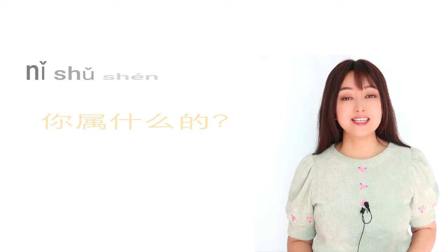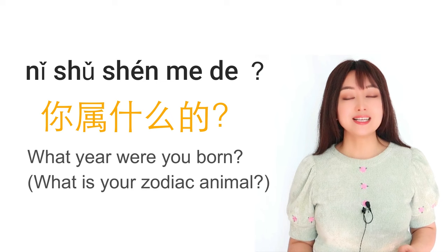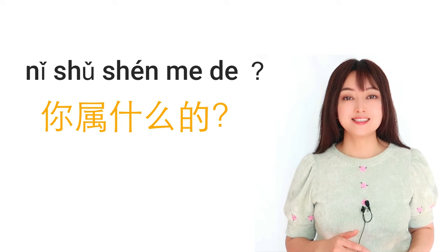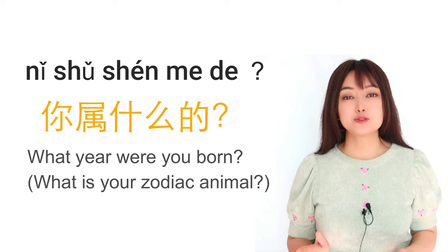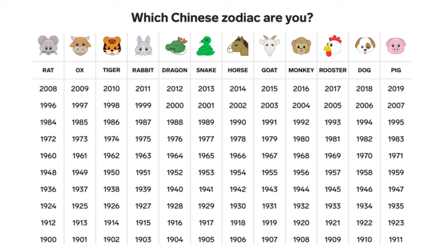Now we have an even more polite indirect way. You ask 你属什么的? which literally means 'what is your zodiac animal?' In Chinese culture, 12 animals take turns to represent each year, and the animal of the year you were born is your zodiac. If you know the order of the 12 animals and are good at math, you can figure out the person's age quickly. If not, you can check the list later. This is the most polite way because we don't mention any numbers — just cute animals.